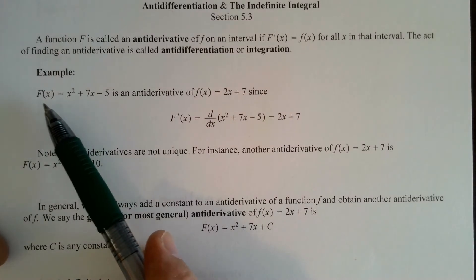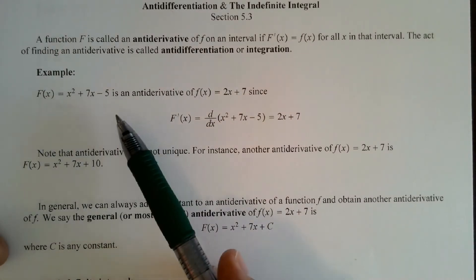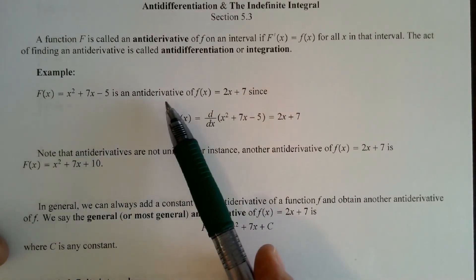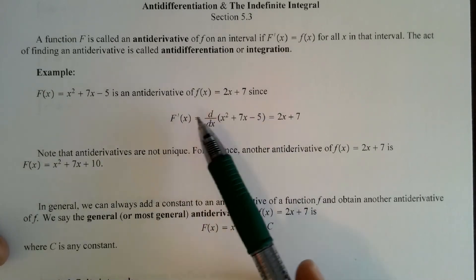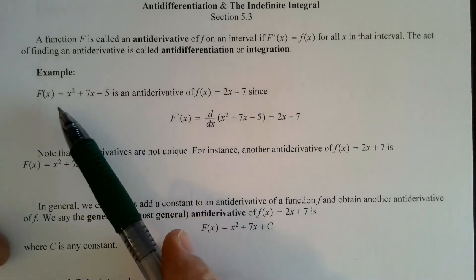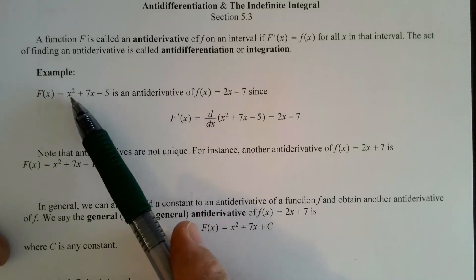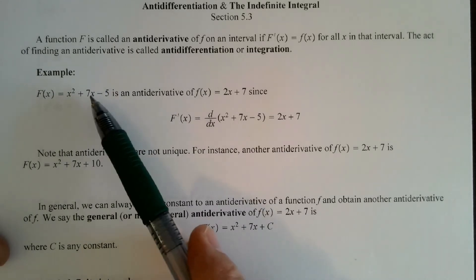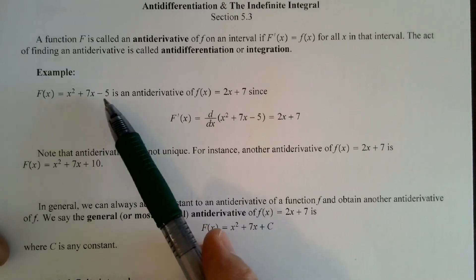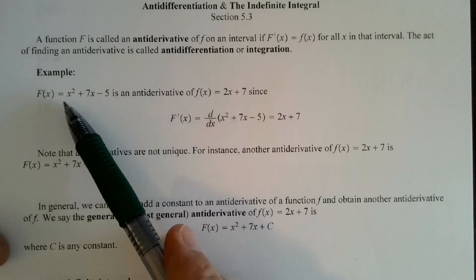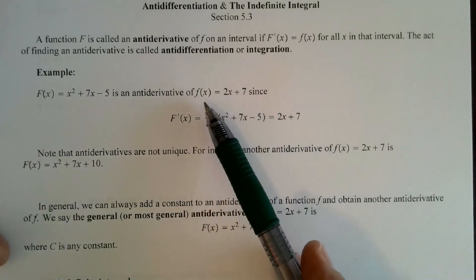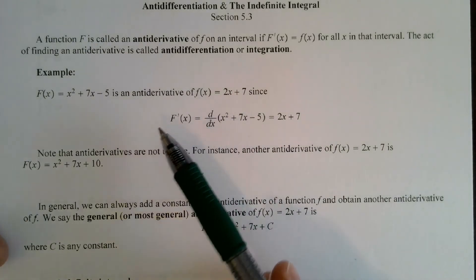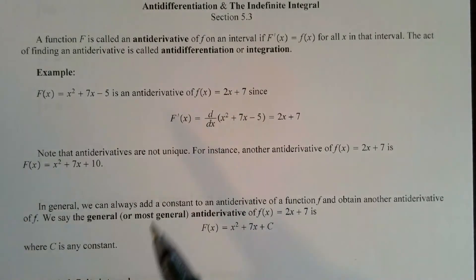Capital F of x is an anti-derivative of the function 2x plus 7. If I take the derivative of capital F, the power rule gives me 2x; the derivative of 7x is 7; and the derivative of the constant 5 is 0. So I get 2x plus 7, which is little f. That makes capital F an anti-derivative.